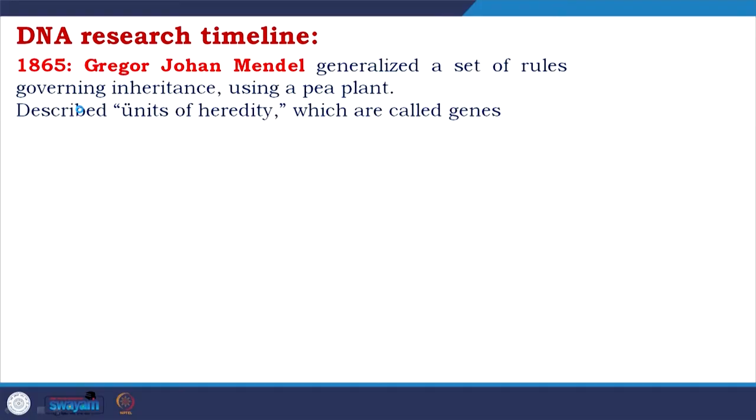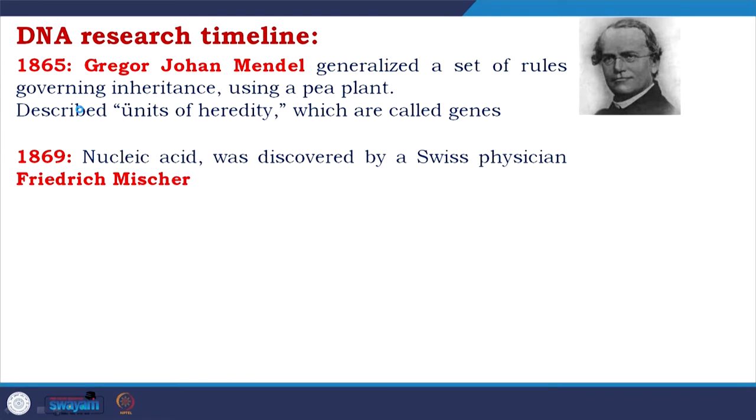We talked about carbohydrate, lipid, and protein. The only polymers left are nucleic acids — DNA and RNA. Before that, let me refresh your memory with the DNA research timeline. First, in 1865, Gregor Johann Mendel — known as the father of genetics — did extensive hybridization and developed the basic laws of genetics. In 1869, Frederick Miescher came up with nucleic acid, which he called nuclein. In 1878, Albert Kossel from the same lab identified the molecule nucleic acid and established that it consisted of four bases and sugar molecules.